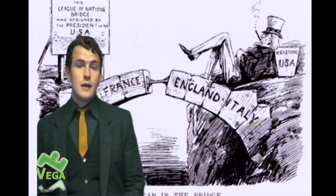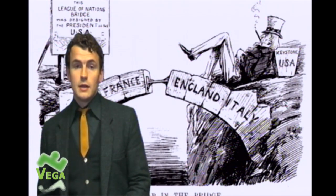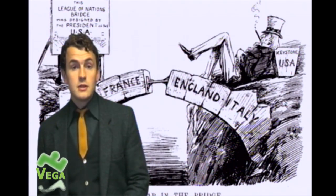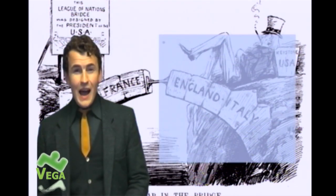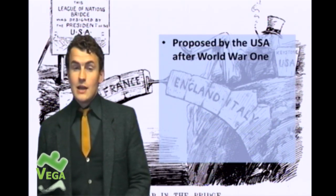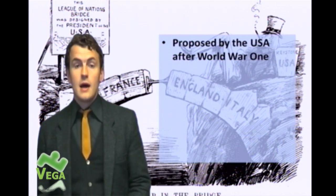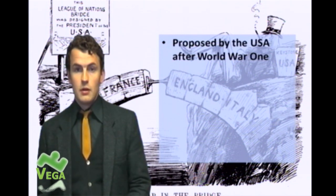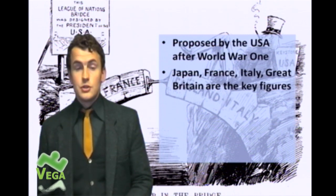We're going to look at the Manchurian crisis, but before I do, I'm going to speak about the League of Nations. The League of Nations is an organisation which was originally proposed after World War One finished, and it was proposed by the United States of America. The purpose of the League of Nations is to prevent future conflicts from breaking out. However, when they finally sit down to make arrangements, the USA actually decided not to join, leaving four key powers as part of the League: Britain, Italy, France, and Japan.